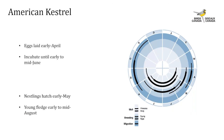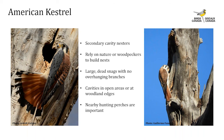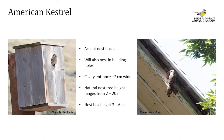In Ontario, kestrels begin laying eggs in early April and incubation is complete by early to mid-June; nestlings begin hatching in early May and will fledge as late as early to mid-August. They are secondary cavity nesters, relying on natural or pre-existing woodpecker-made cavities. They prefer cavities in large dead snags with no overhanging branches above the cavity. Cavity trees are in open areas but they'll also nest at woodland edges. Hunting perches near the nest — dead branches or hydro wires — are very important. They readily accept nest boxes and will also nest in holes in buildings.